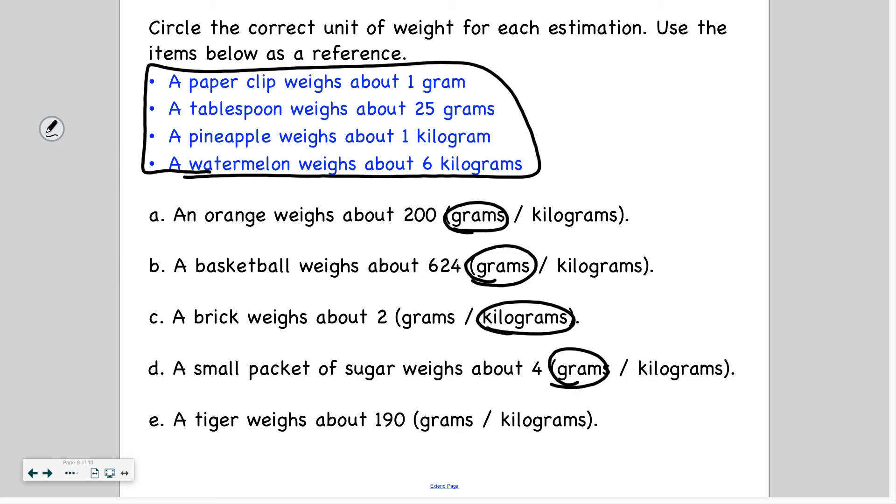And then a tiger weighs 190 grams or kilograms. I'm definitely going with kilograms because a tiger weighs so much more than a watermelon. And a watermelon is only 6 kilograms. So 190 kilograms makes sense.